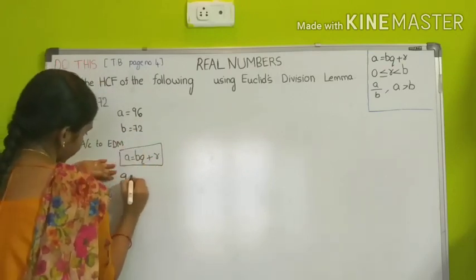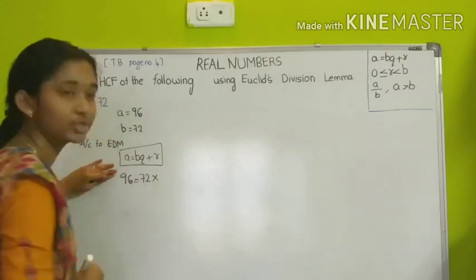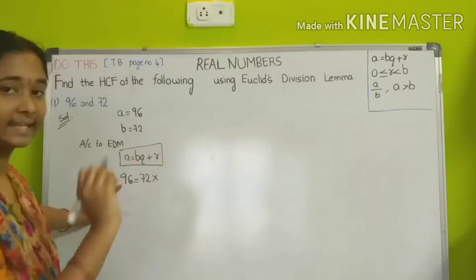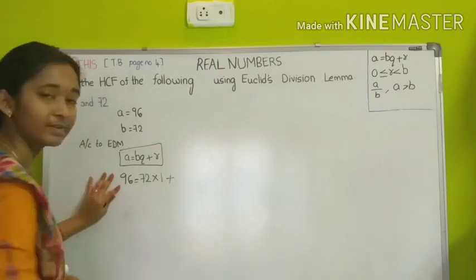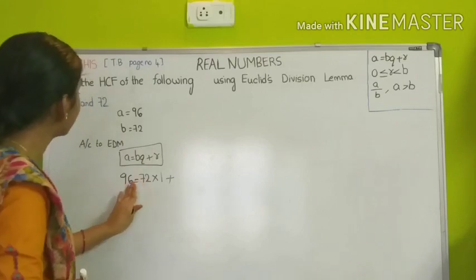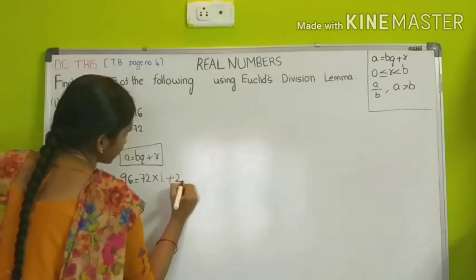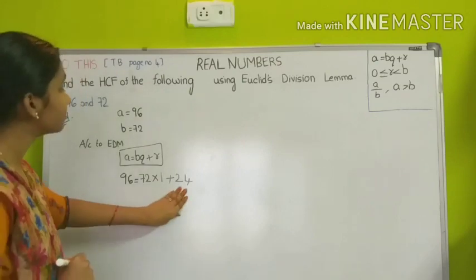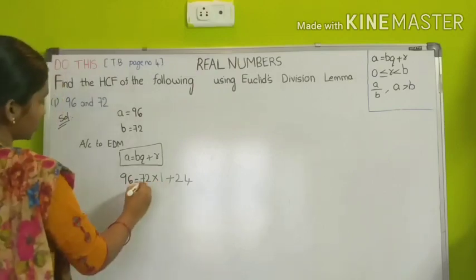We substitute: A is 96, B is 72. 72 once are 72, which is less than 96; 72 twos would be greater than 96, so we take quotient 1. So 96 equals 72 into 1 plus the remainder. 96 minus 72 is 24, so the remainder is 24. The remainder didn't become equal to 0, so we continue the process by taking 72 and 24.